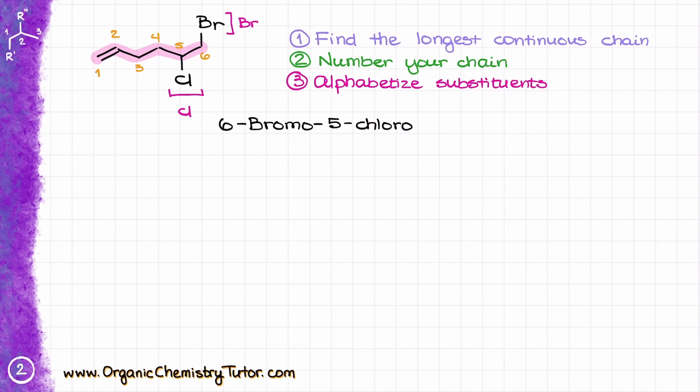Then I call out my chlorine substituent, which is 5-chloro. My parent chain has six carbons, so the parent starts with hex. I need to specify where the double bond is located — in this case, it starts from carbon number one, so I say hex-1-ene. Remember, we always need to specify where the double bond is, and we always name the first carbon where the double bond begins, not the second one.